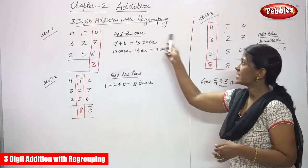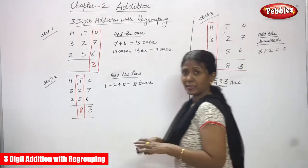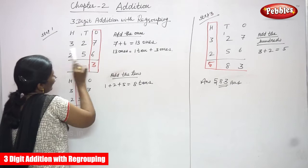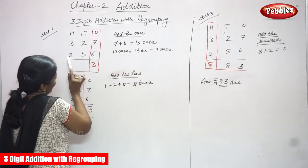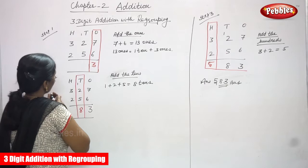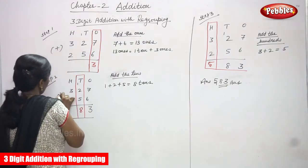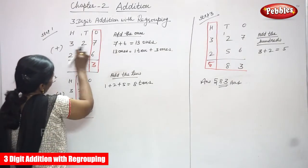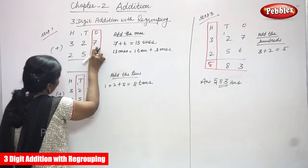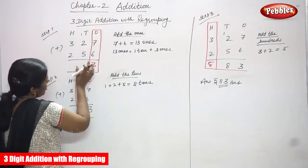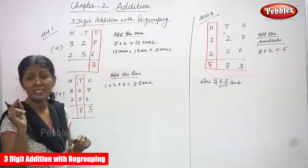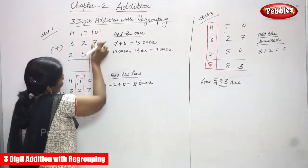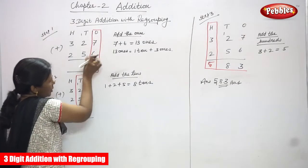We are going to do three-digit addition with the regrouping method. Step one — this is the ones place, this is the tens, and this is the hundreds. So I'm going to add: first we have to write the place values — ones, tens, and hundreds — then write the number according to the place value, then focus on the ones place first.